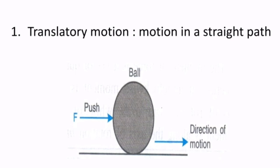Coming to the meaning of translatory motion: when any object moves in a straight path, it is called translatory motion. For example, in this picture you can see a ball moving in a straight path — it is not taking any diversions or turns. Because it moves only in a straight path, it is called translatory motion.